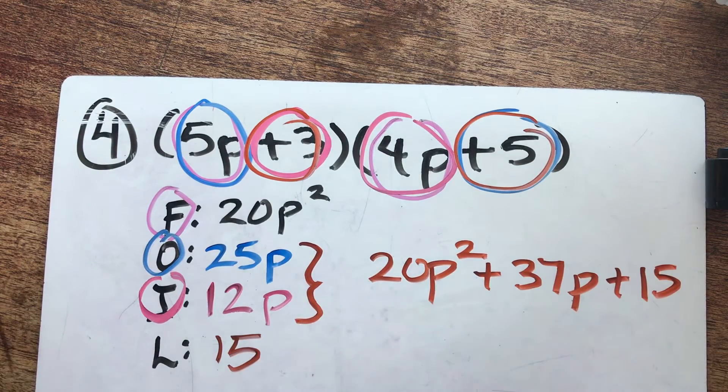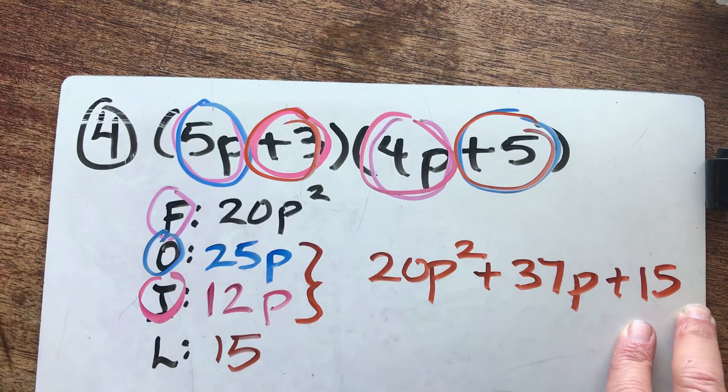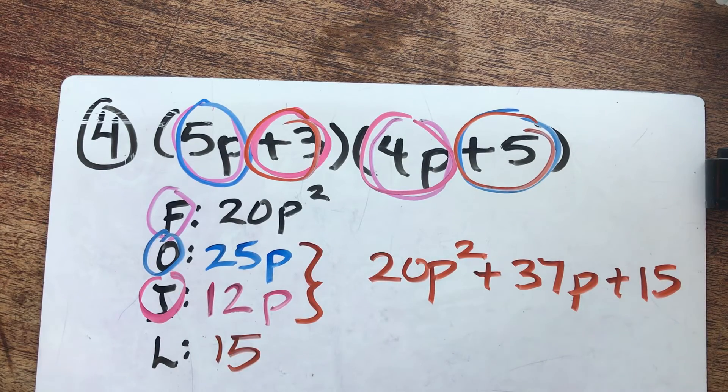And then we have this beautiful constant at the end. Notice this trinomial has one, two, three parts. Like a tricycle has three wheels. A trinomial has three parts. P squared. A regular P. And the last guy has no P. And that's our beautiful answer.